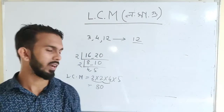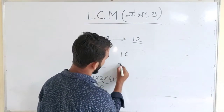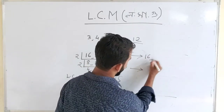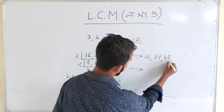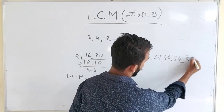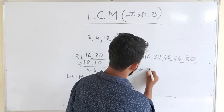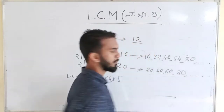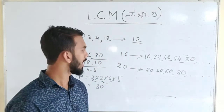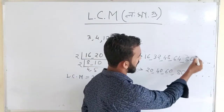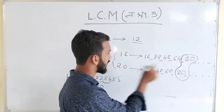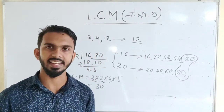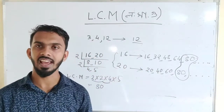So, what do we do with 16 and 20? Multiples of 16: 16, 32, 48, 64, 80. Multiples of 20: 20, 40, 60, 80. The common multiple for all of us is 80. So we have 80 — the LCM of these two numbers.